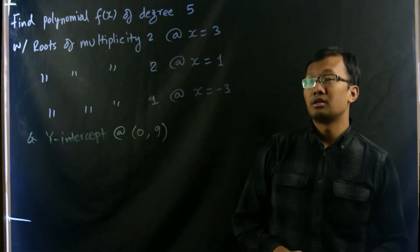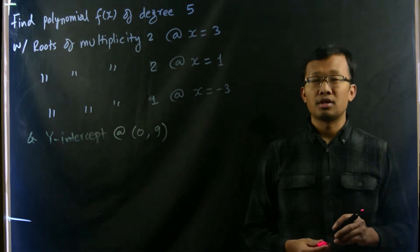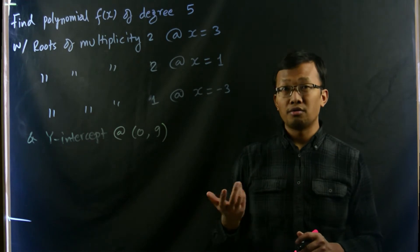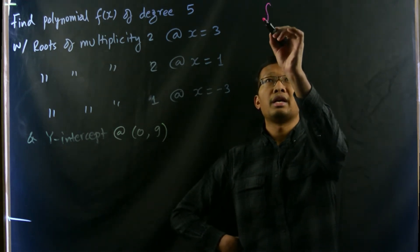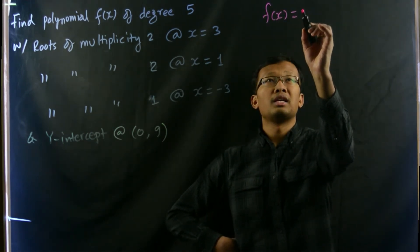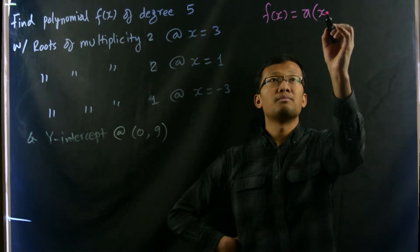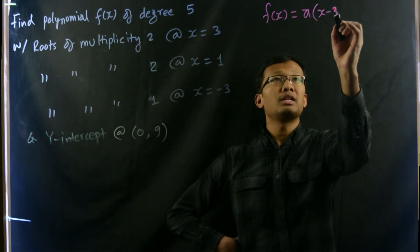Then let us write down the initial version of the polynomial function which would be f(x) equals a times (x minus 3) squared.